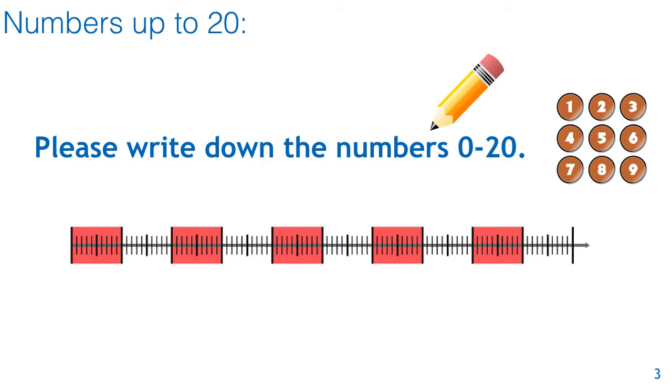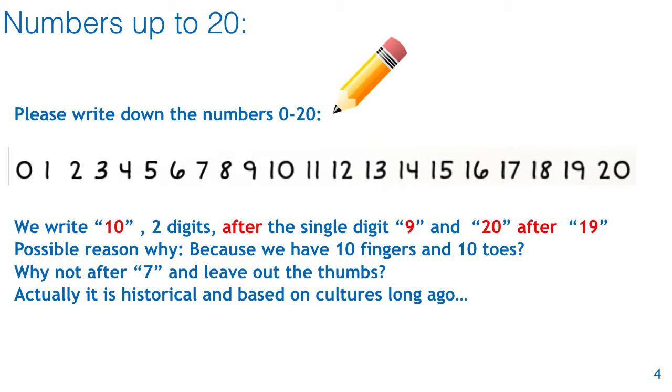The first thing is to write the numbers up to 20 starting with zero. And here they are. You can see the sequence that I've written down. And as you can see, we write 10 or two digits after the single digit 9 and then after 19 we write 20.